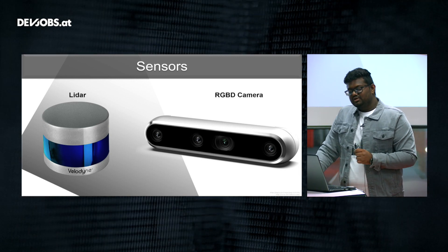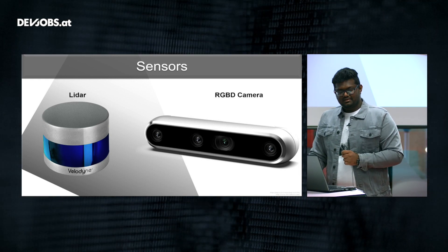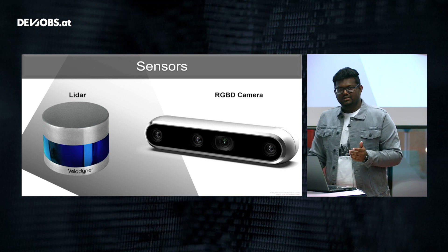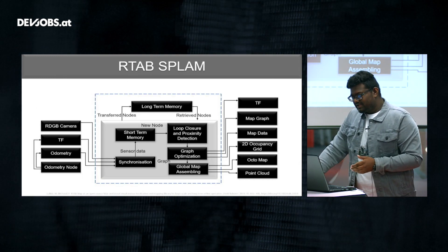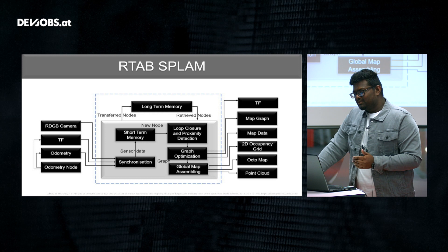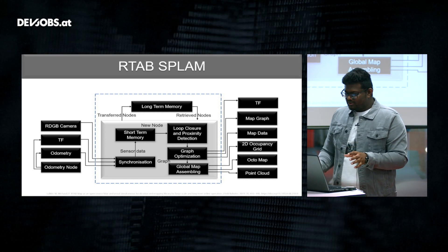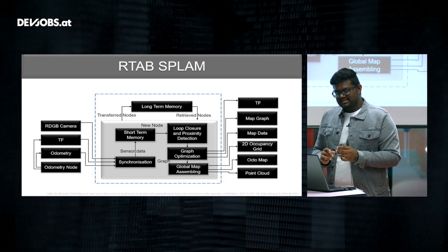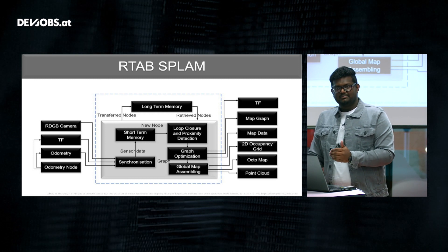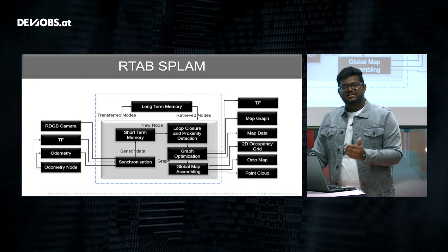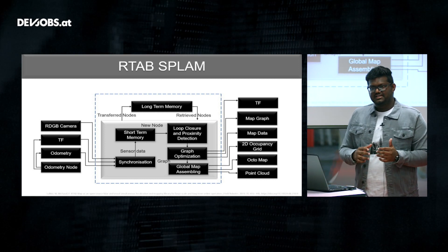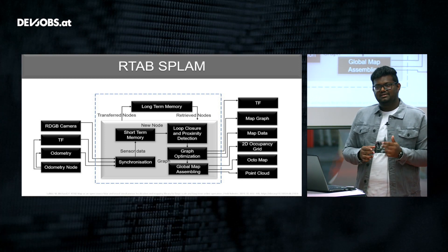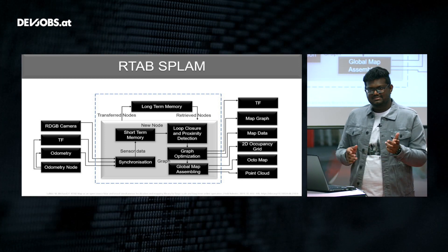Recently there is a lot of development in RGBD cameras because cameras are cheap compared to other sensing devices. Today let's discuss an introduction and overview of one such approach to solve the SLAM problem. SLAM is simultaneous localization and mapping — you are trying to localize and map the environment at the same time, just like how I tried to map Linz.